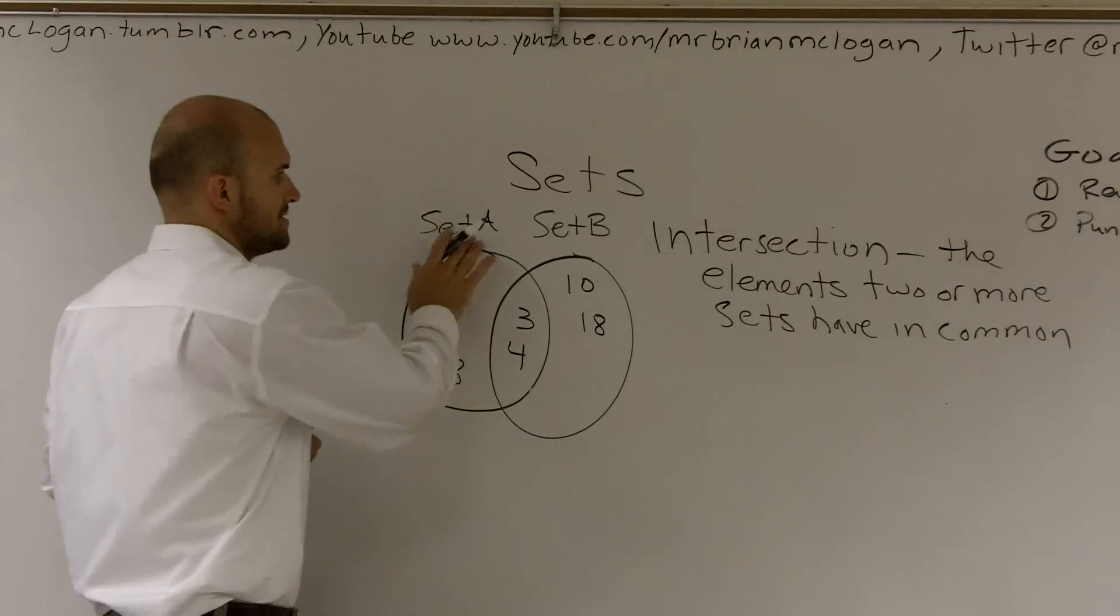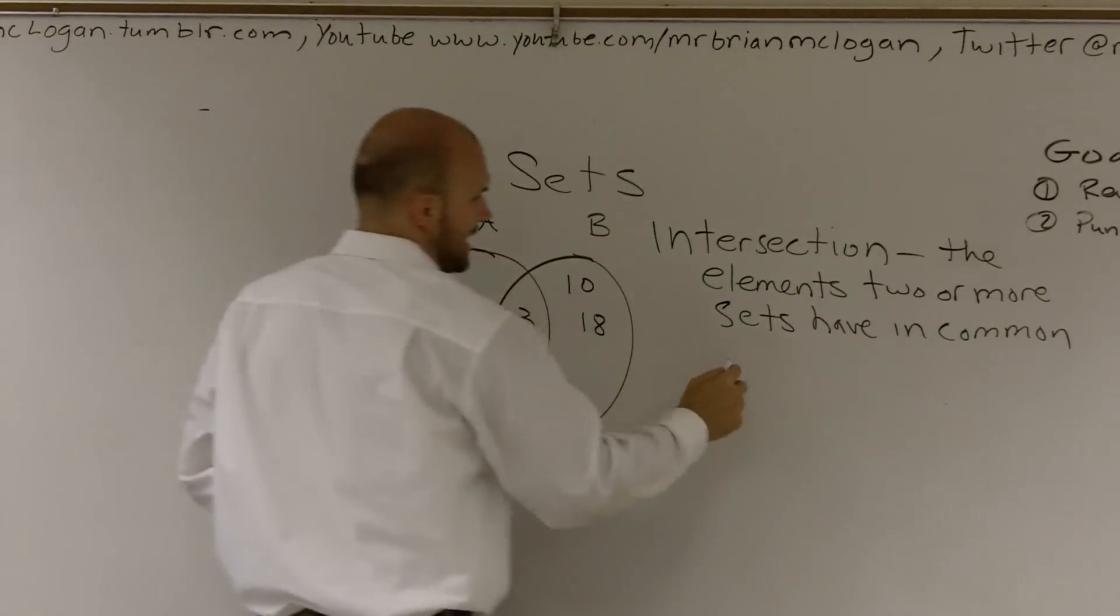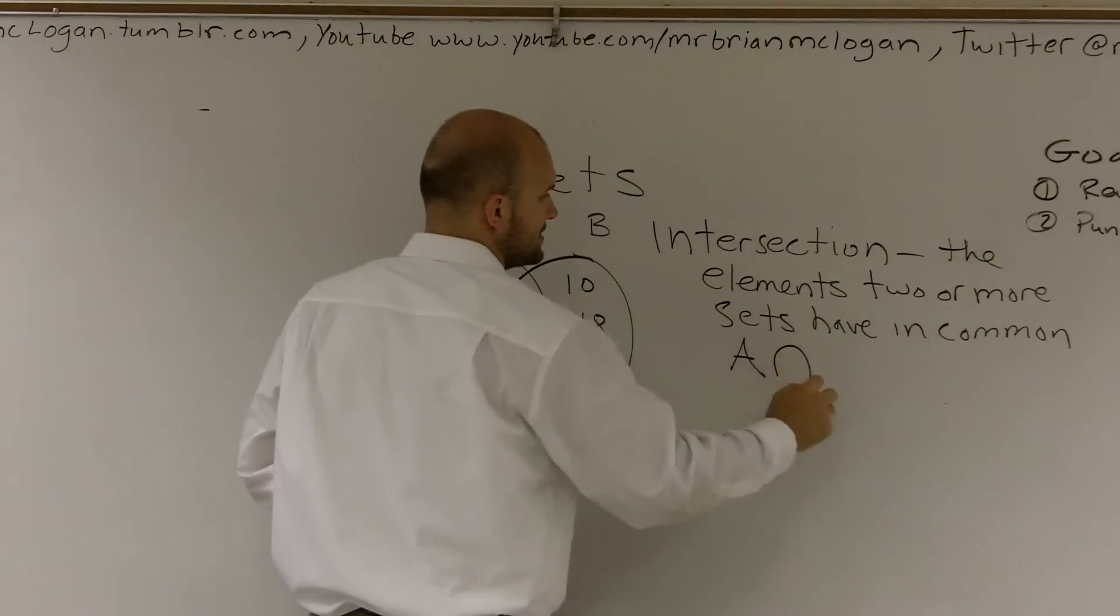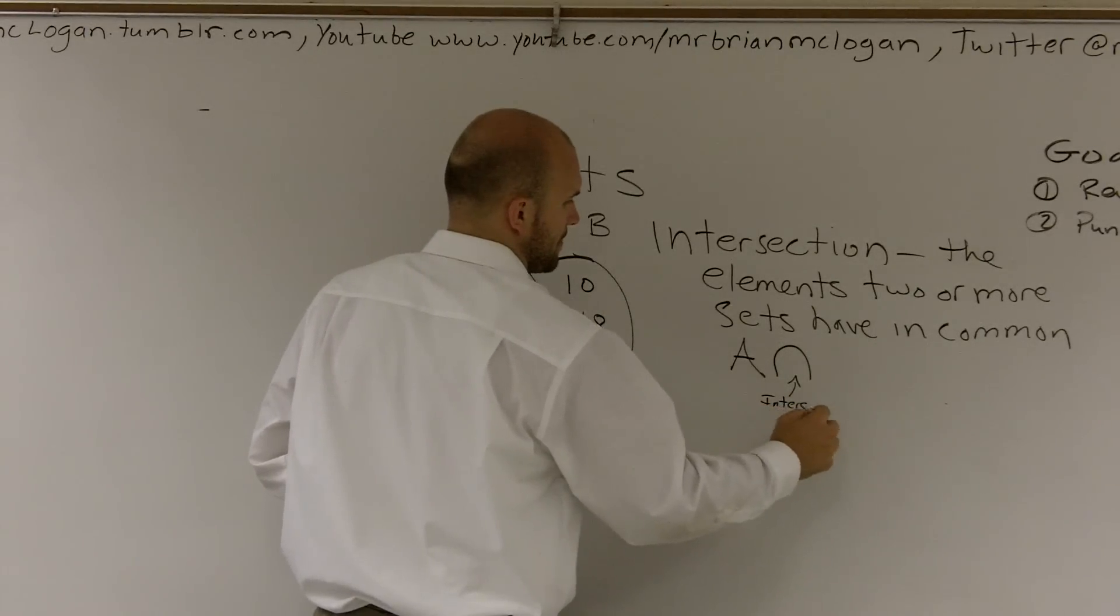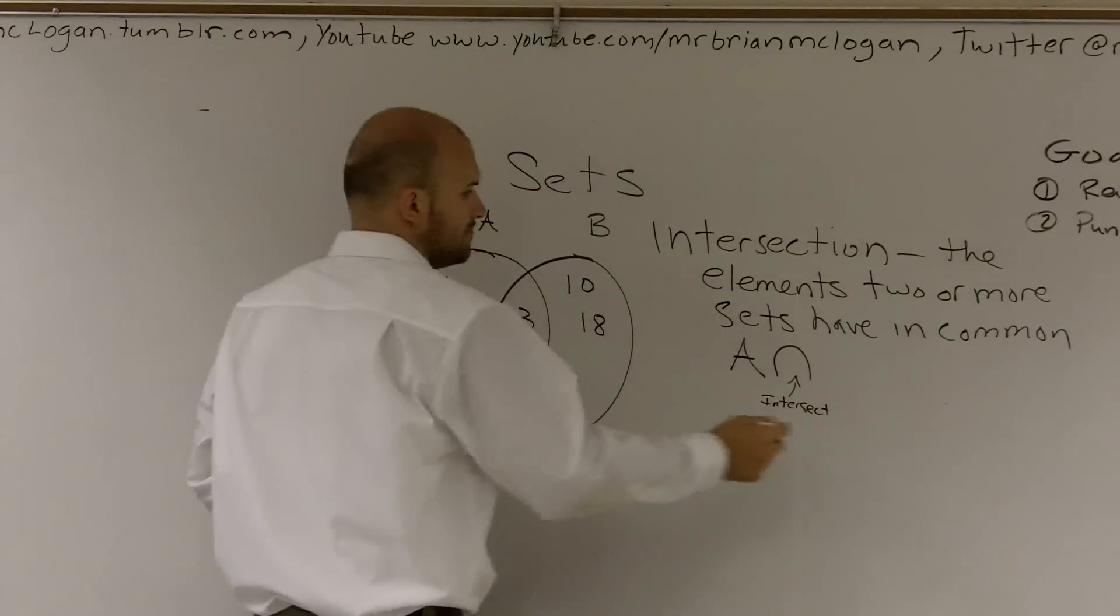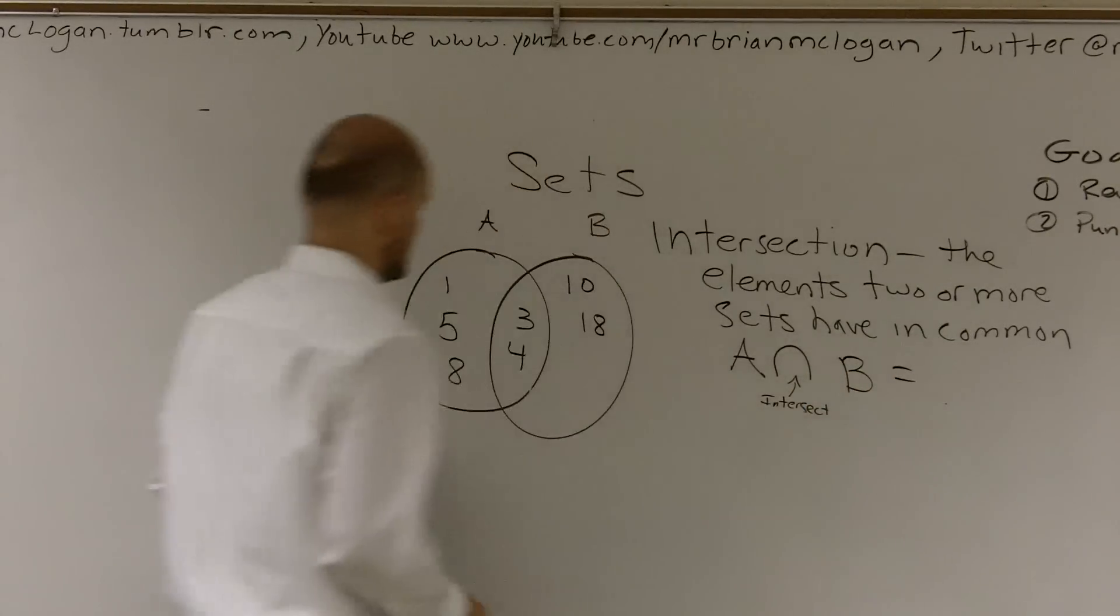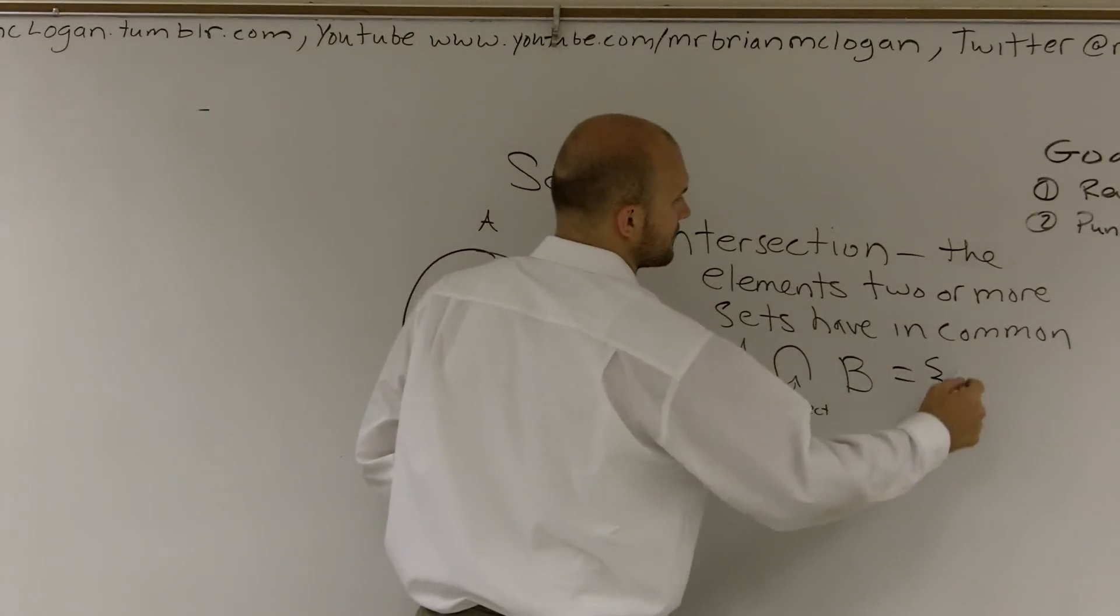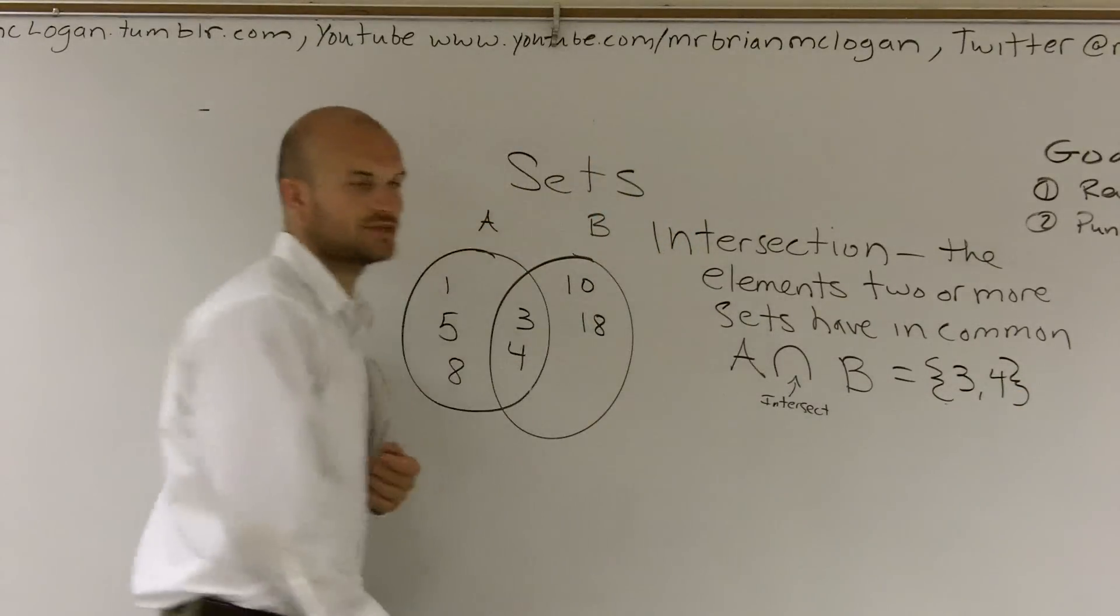So the notation that we use is, I'm just going to call this, instead of saying set, we're just going to write A and B. So we write A intersect, that means intersect, B, and what that equals is three and four. The elements three and four. And we like to use brackets as another way that we like to represent sets.